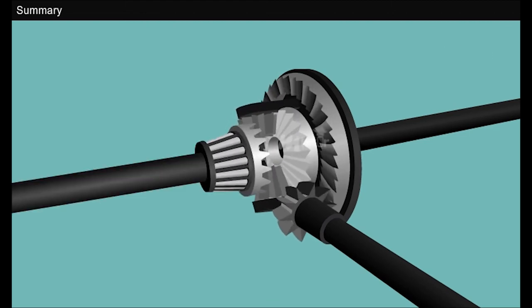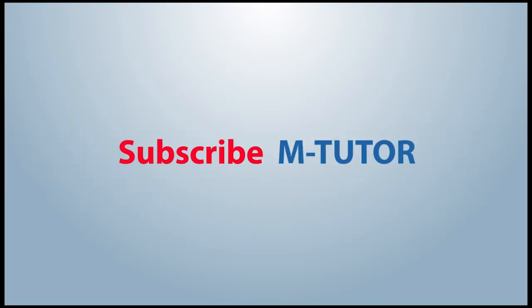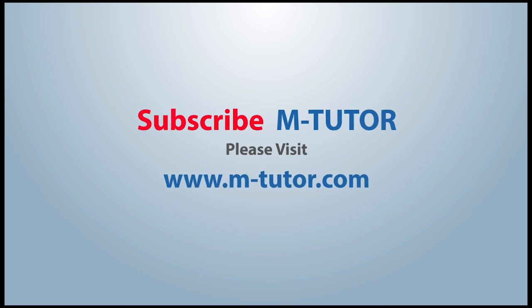Spider gears can rotate along the ring wheel and can spin on their own axis. When a vehicle moves straight, the spider gears rotate along the axle gears, but when a vehicle takes a turn, the spider gears tend to rotate as well as spin on their own axis.